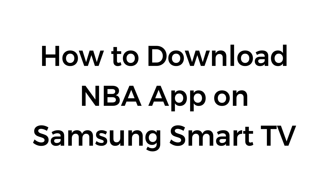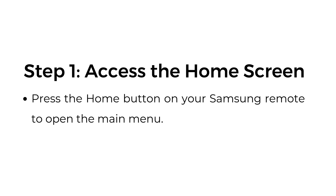How to download the NBA app on Samsung Smart TV. Step number one: access the home screen. Press the home button on your Samsung remote to open the main menu.